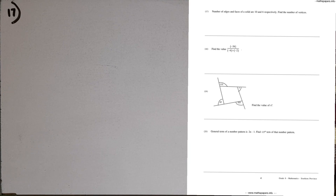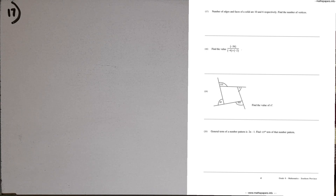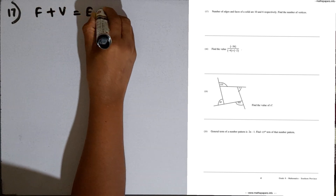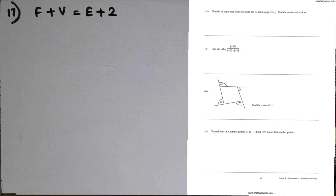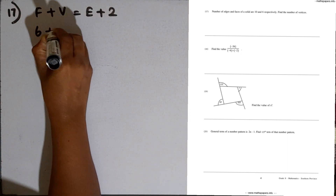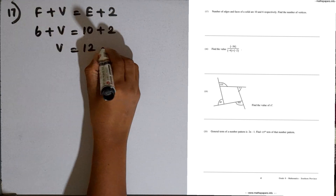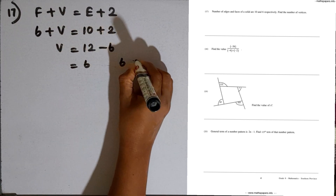Question number 17: a solid has 10 edges and 6 faces. Find the number of vertices. Using Euler's relationship: Faces plus Vertices equals Edges plus 2. So 6 plus V equals 10 plus 2, giving V equals 12 minus 6, which is 6. The solid has 6 vertices.